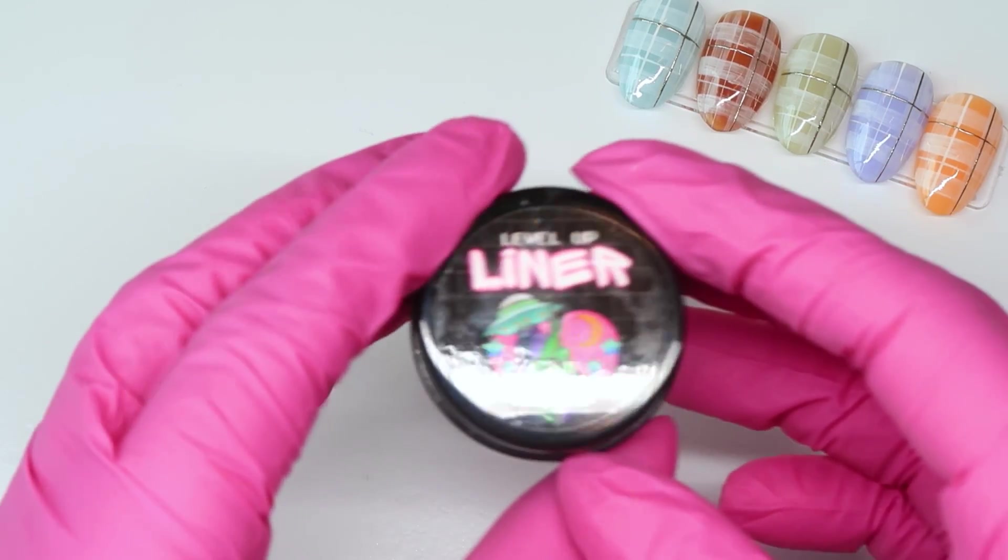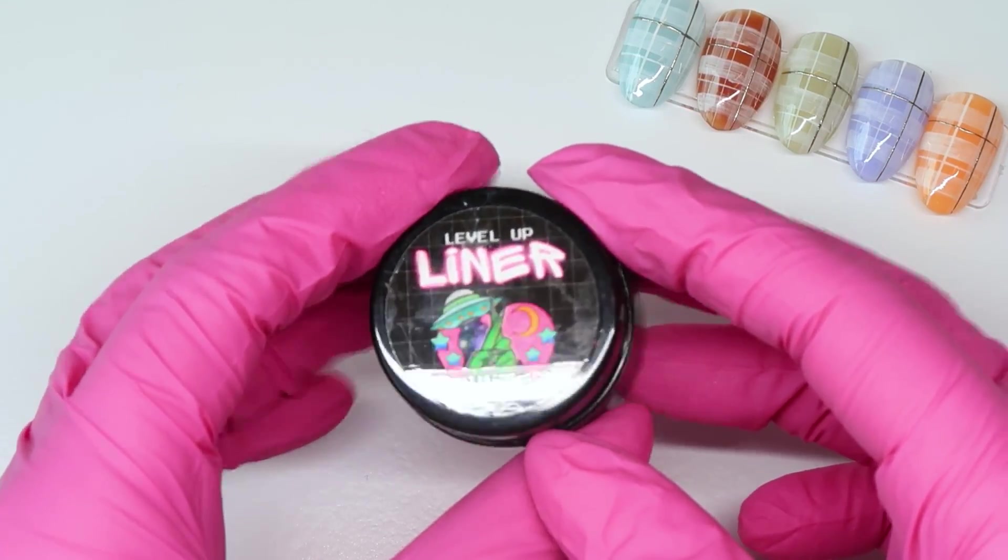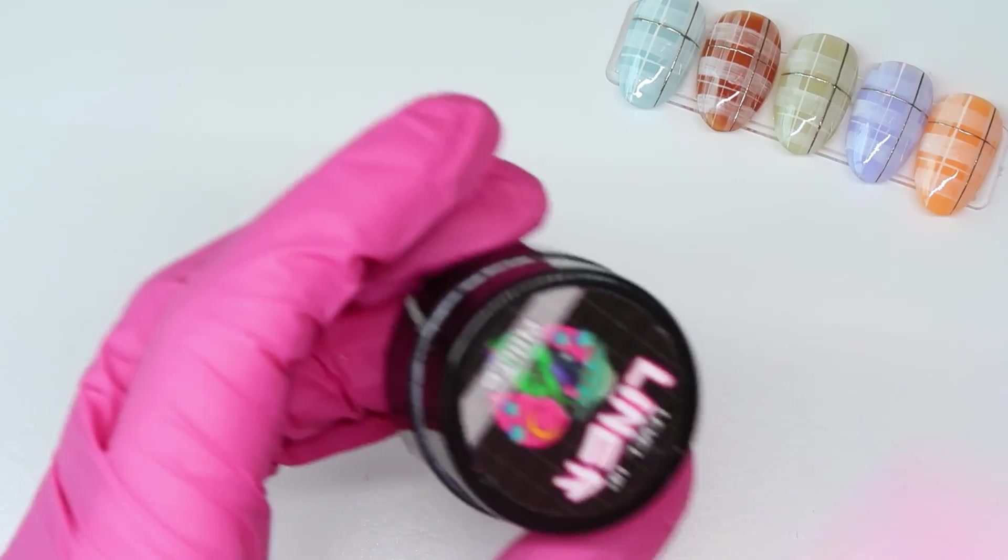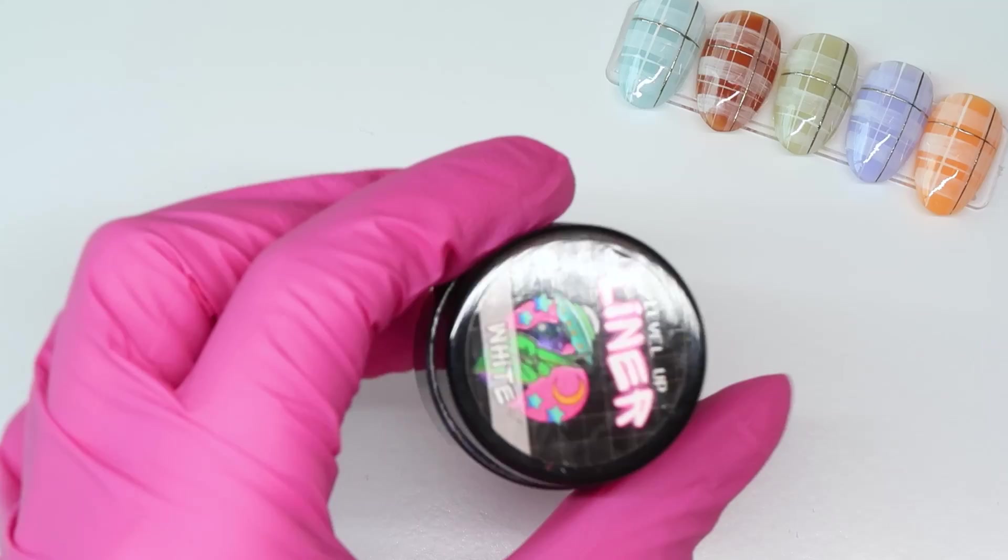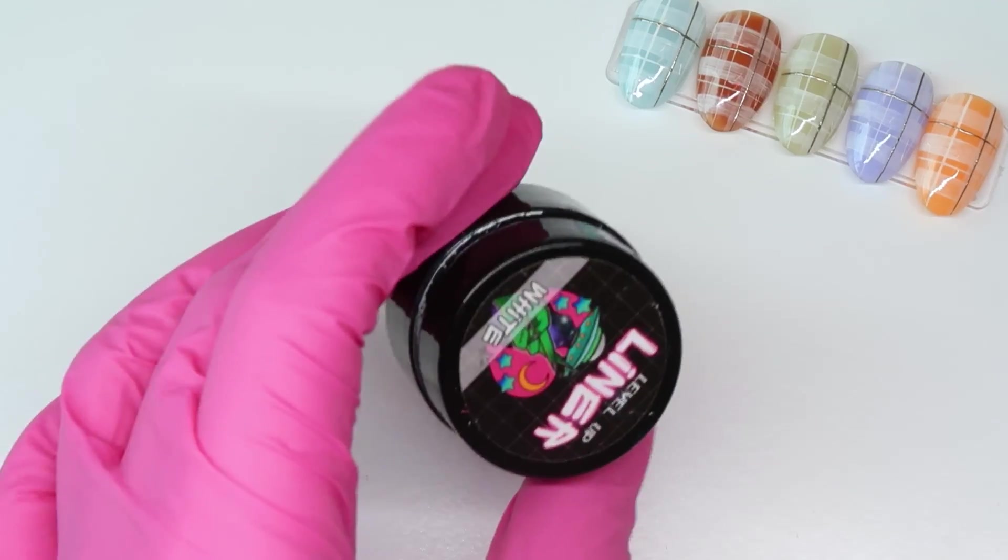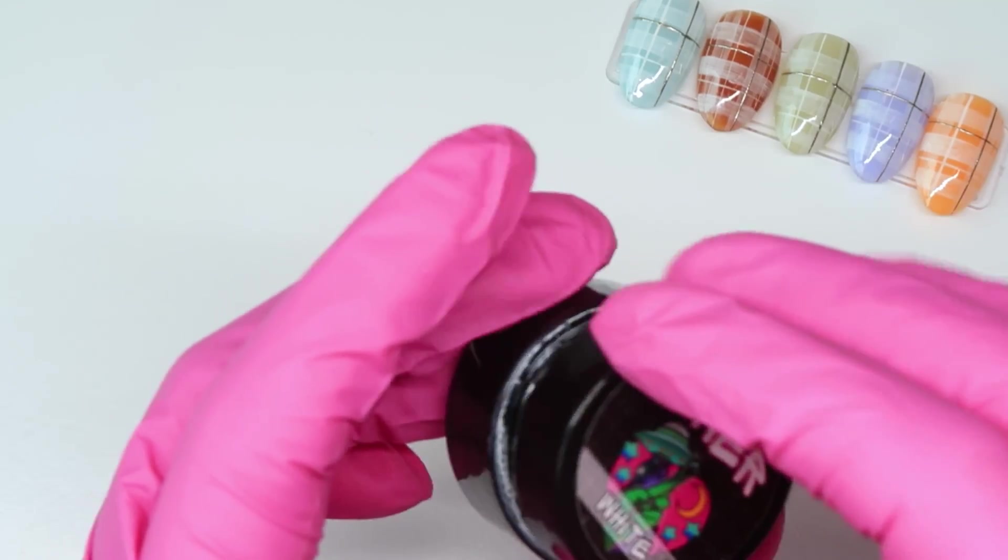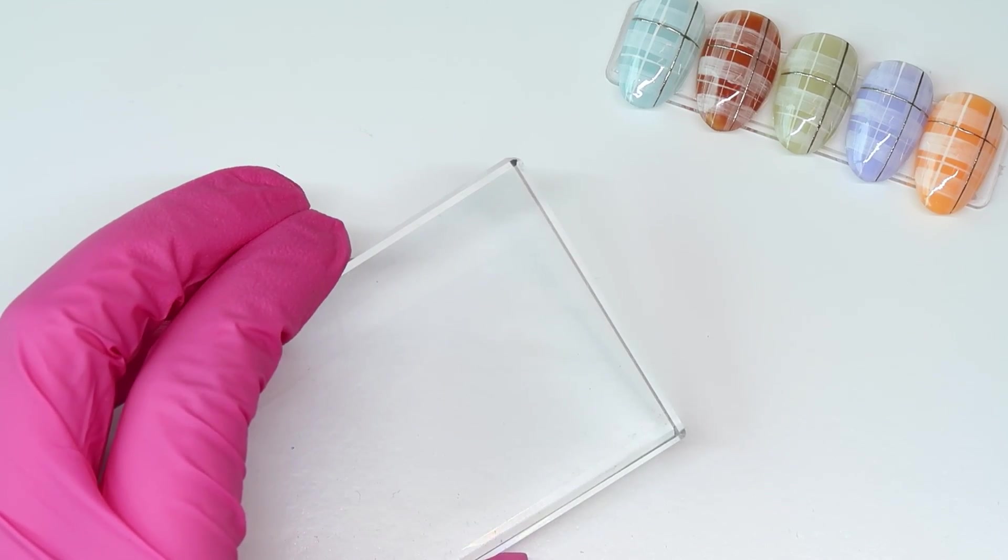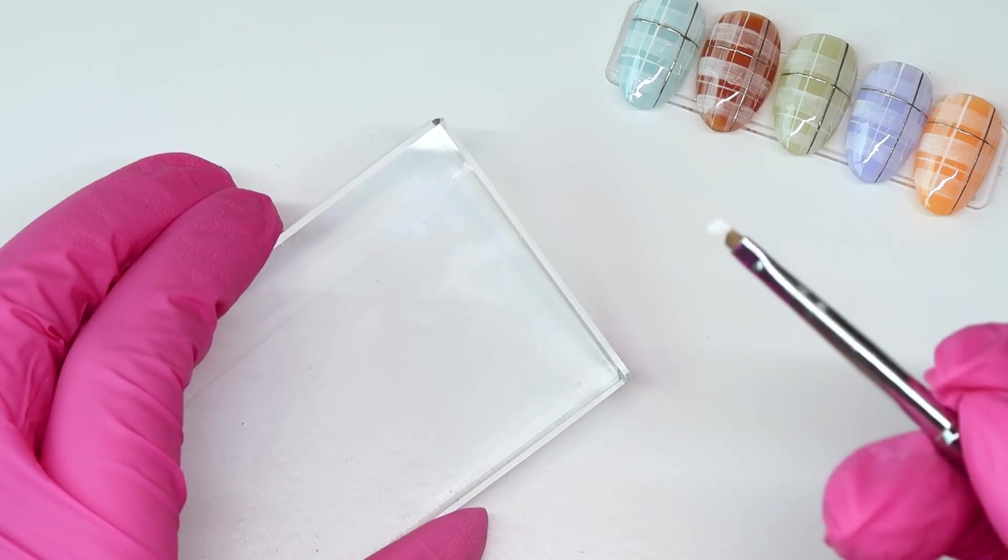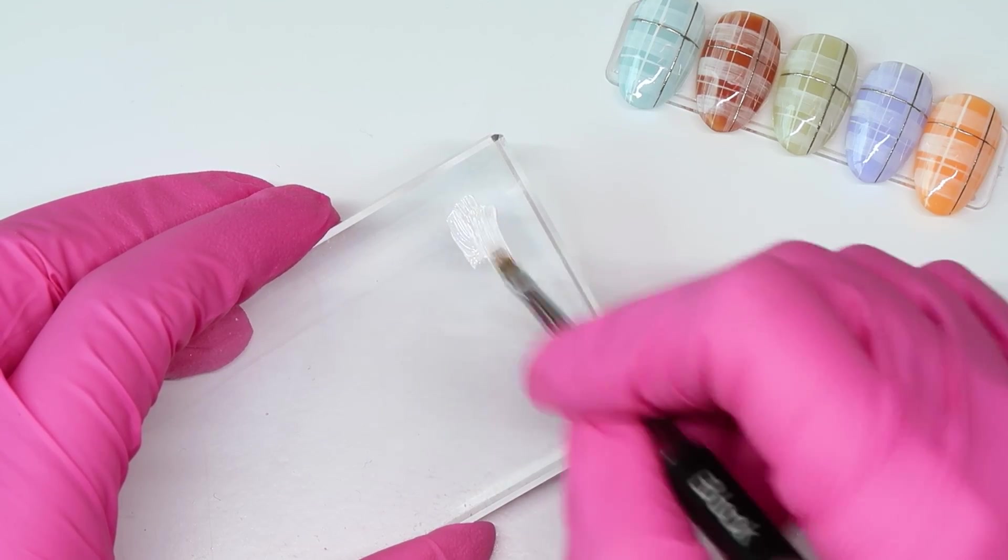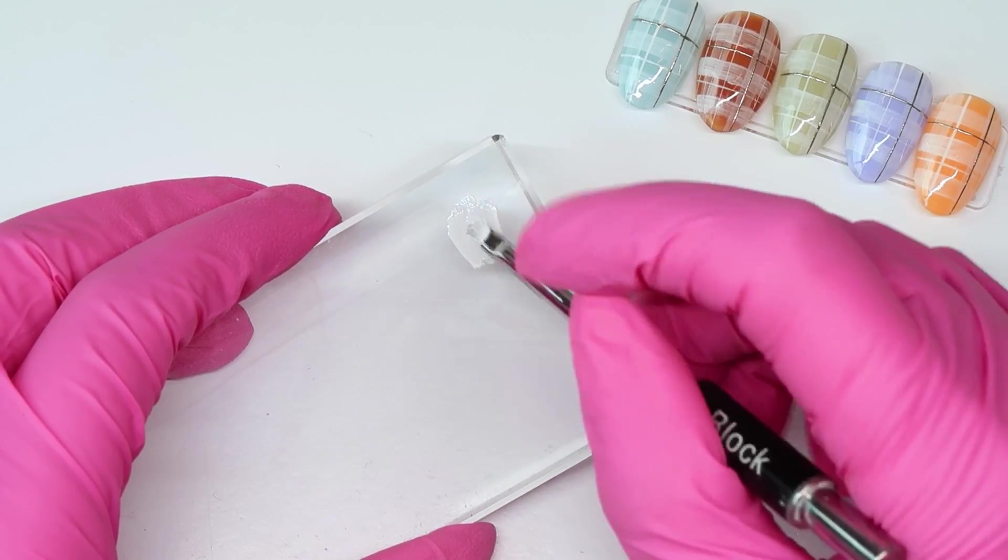And then we're also going to use a white gel paint. This one is the Level Up Liner in White. This is from Nails by Dev on Instagram, which she is amazing with hand painted characters and art. I've been trying out her white gel paint, which I really like. So that's what I'm going to use today. So I'm going to get a palette out and I'm just going to take a tiny bit of that white gel paint and just work it into my brush like this.